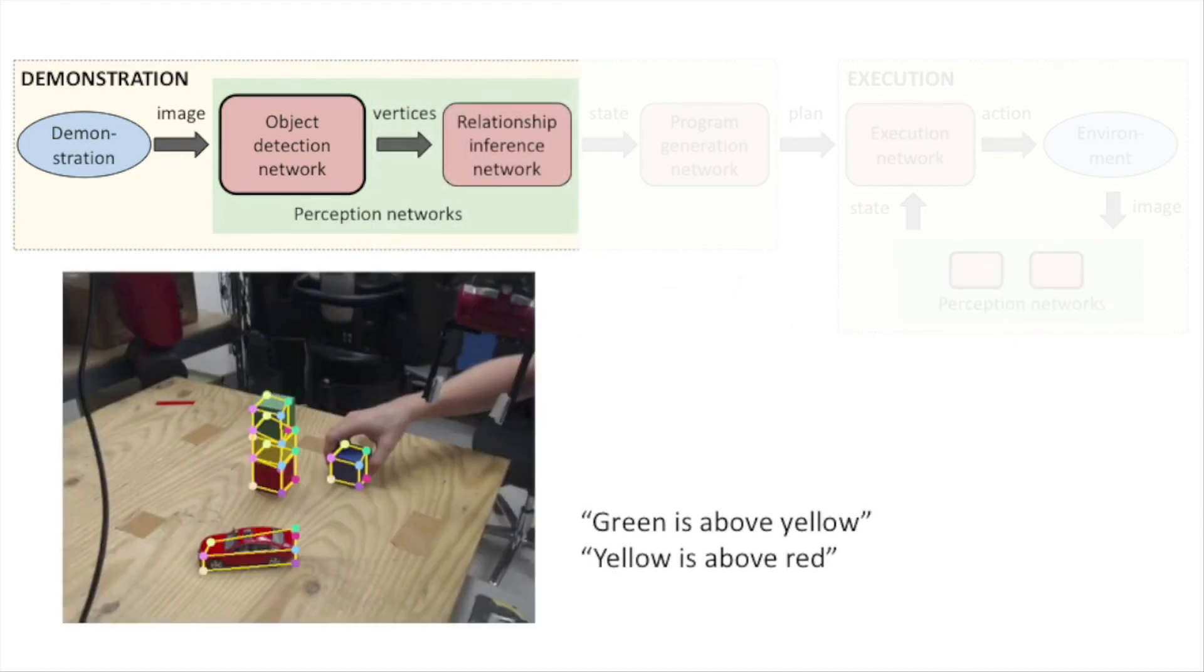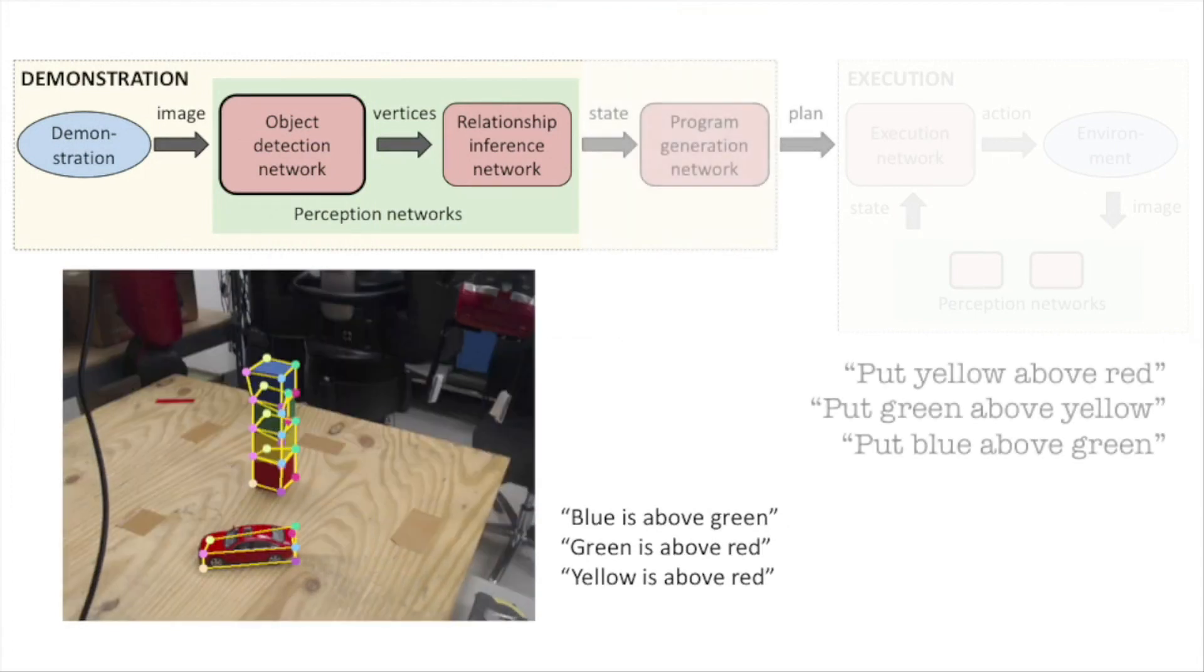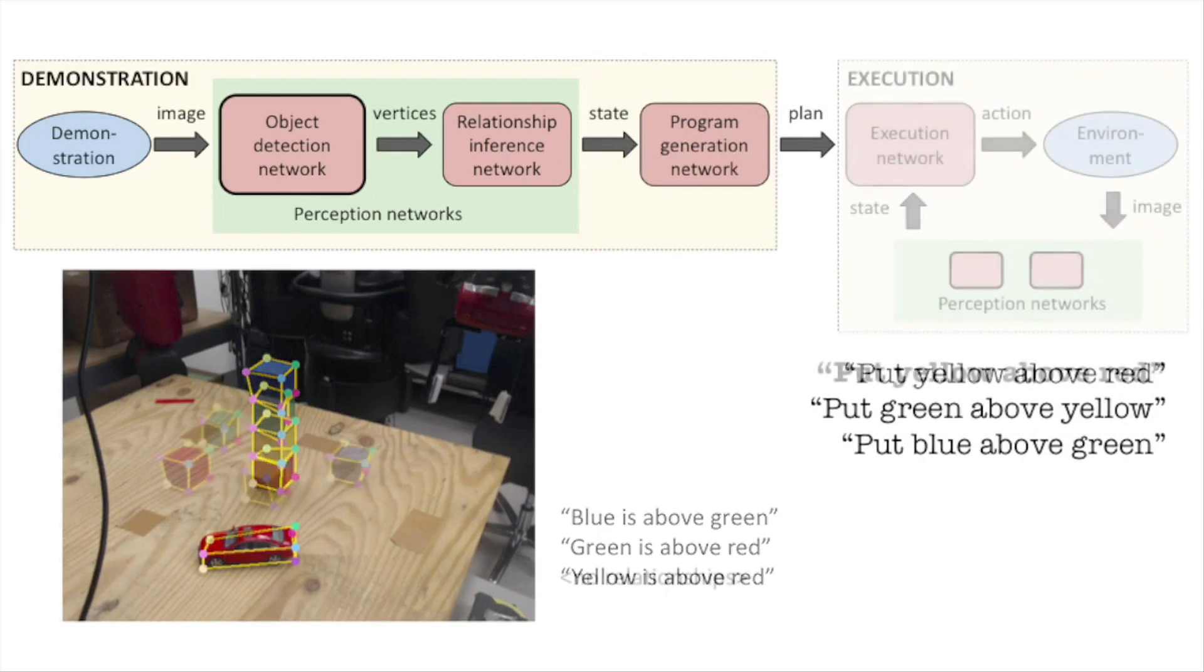After detecting object vertices, a second network infers object relationships. The program generation network consumes observed object relationships and outputs a plan to reproduce the observed arrangement.